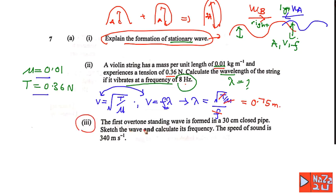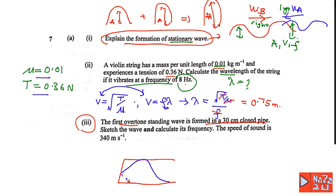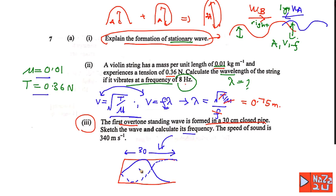Continuing to number three: the first overtone standing wave is formed in a 30 cm closed pipe. For a closed pipe, one end is closed and the other is open. The first overtone for a closed pipe is also the second harmonic. Sketch the first overtone and calculate its frequency for the 30 cm closed pipe.